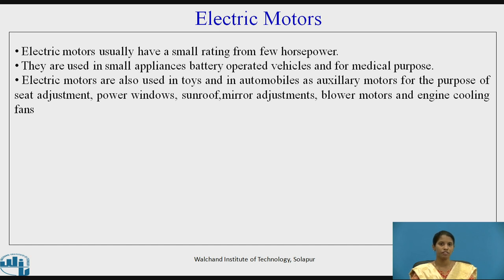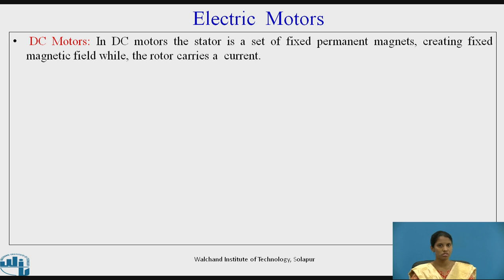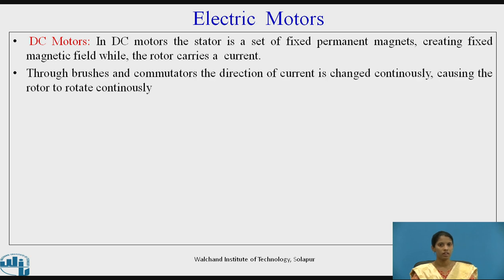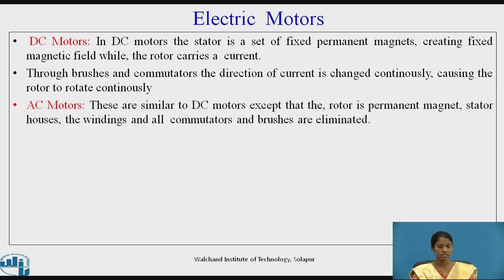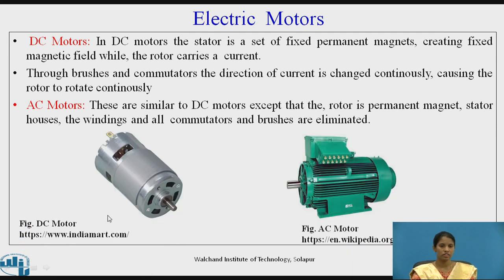Electric motors are used for blower motors and engine cooling fans. In DC motors, the stator is a set of fixed permanent magnets creating a fixed magnetic field, while the rotor carries a current. Through brushes and commutators, the direction of current is changed continuously, causing the rotor to rotate continuously. AC motors are similar to DC motors except that the rotor is a permanent magnet, the stator houses the windings, and all commutators and brushes are eliminated.